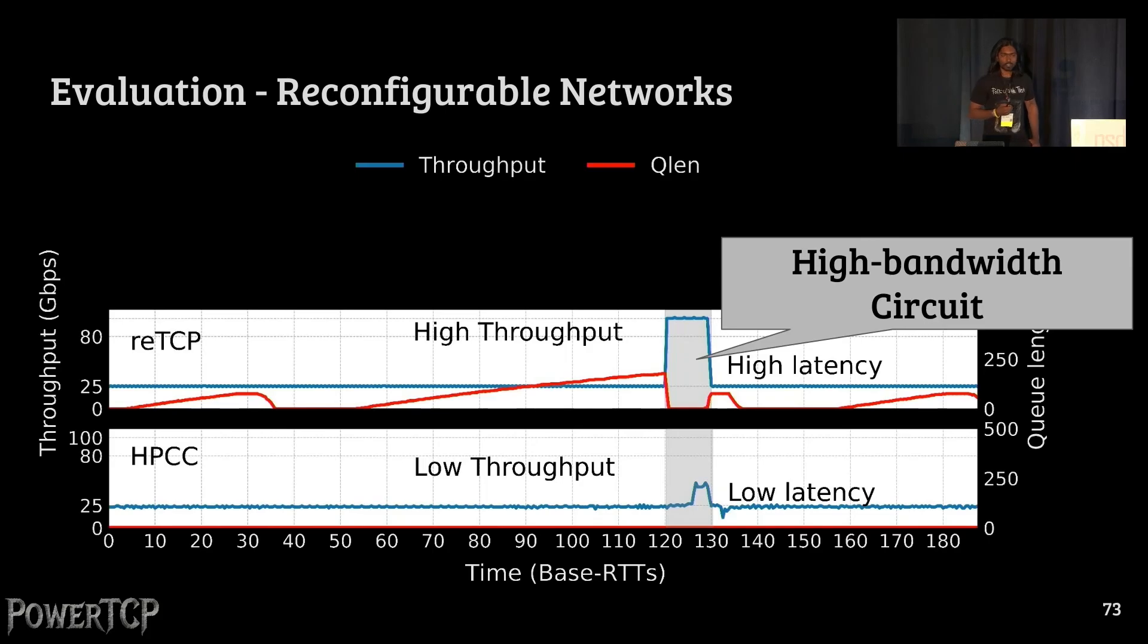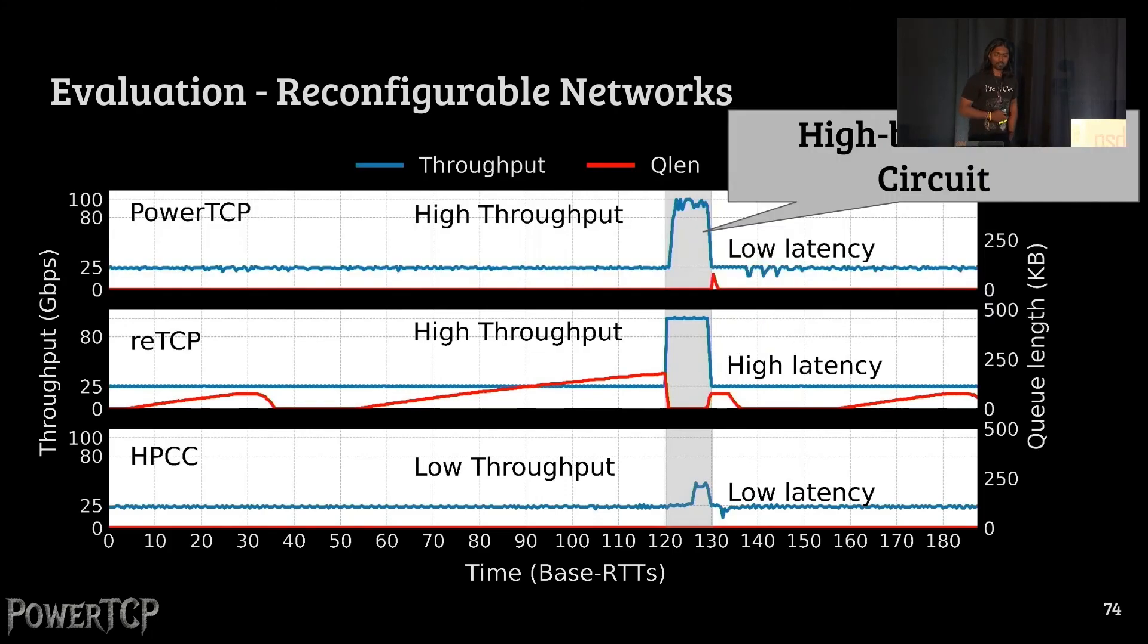And we also compared against ReaaTCP, which is a recent publication from NSDI 2020, specifically tailored for this use case. It indeed achieves high throughput, but at the cost of high latency as well. PowerTCP, on the other hand, quickly fills the available bandwidth, achieving around 85% utilization, while still maintaining low latency.